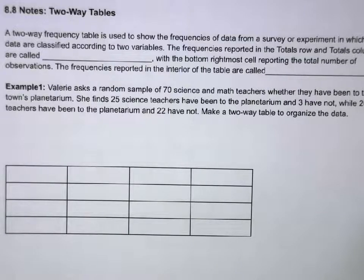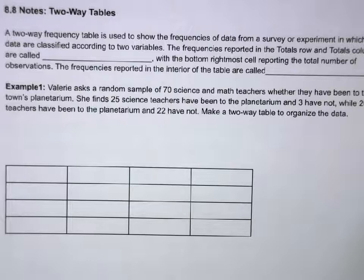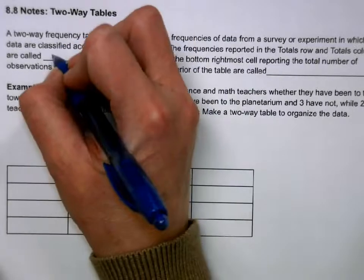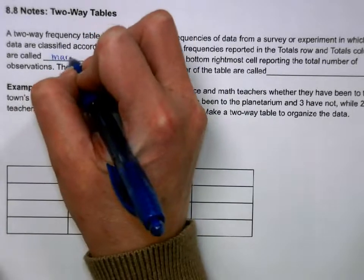Today we're going to be talking about two-way tables. A two-way table is a frequency table used to show frequencies from a survey in which data is classified according to two variables. The frequencies in the totals row and the totals column are called marginal frequencies.